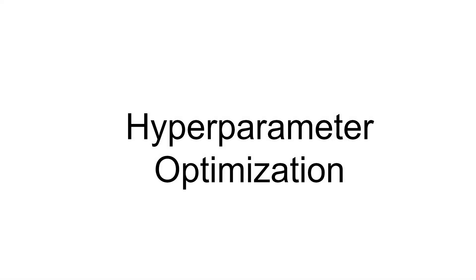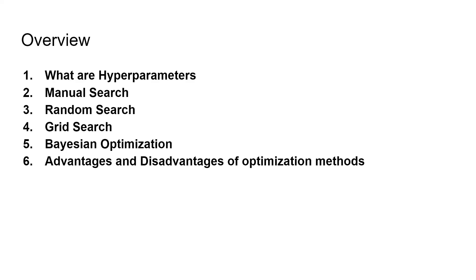Hi guys and welcome to this episode on hyperparameter optimisation. The topics for this episode are: what are hyperparameters, followed by some hyperparameter optimisation methods such as manual search, random search, grid search, and Bayesian optimisation, and the last topic is advantages and disadvantages of these optimisation methods.